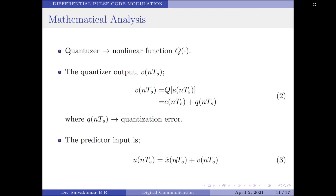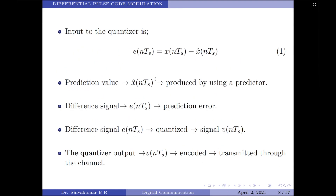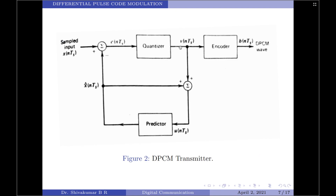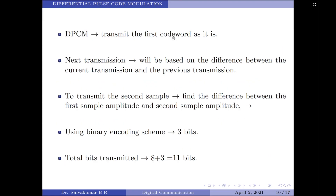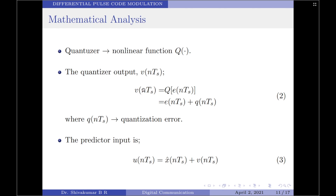Let us now move on to the mathematical analysis of the DPCM system. Let the quantizer be characterized as a non-linear function Q. The quantizer output is represented as V(nts). The quantizer output V(nts) equals the quantization function applied on E(nts). I can relate these two as: V(nts) equals E(nts) plus Q(nts), where Q(nts) is the error produced by the quantization process. So the output of the quantizer differs from the input of the quantizer by the quantization error.